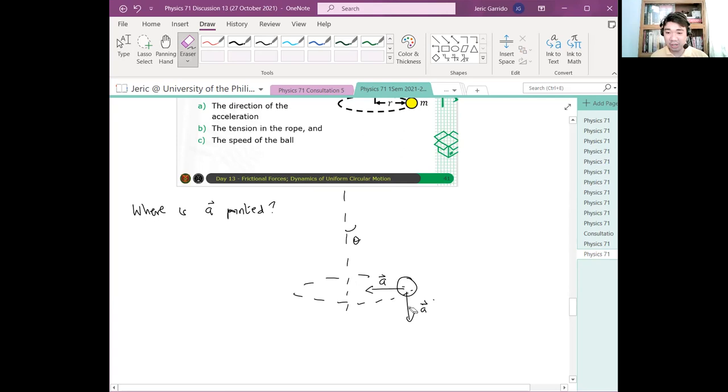Dito yung A mo ngayon. Hindi sa iba. Ang direction ng acceleration ay dito sa center C, the center of this circle created. Next? Nakuha? Bakit importante yun? Kasi yun yung magdedetermine ng radial at tangential components natin.